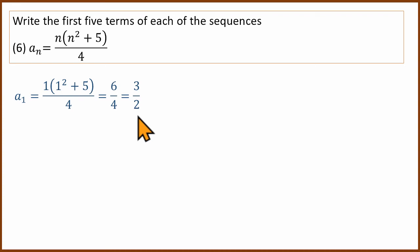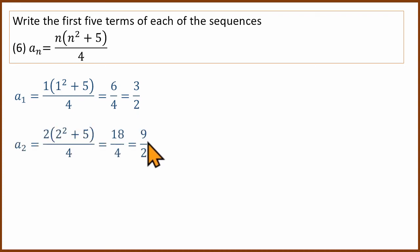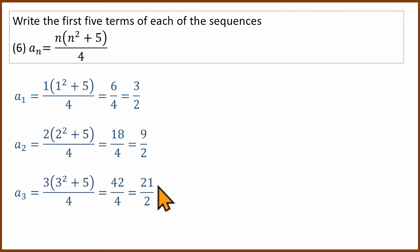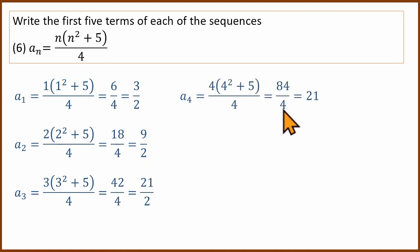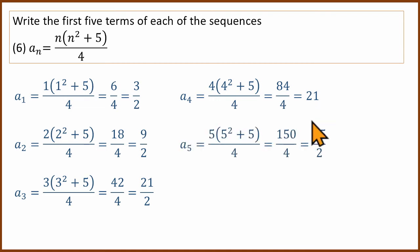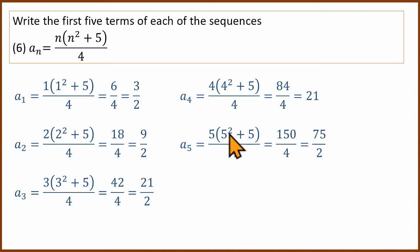You substitute values n = 1, 2, 3, 4, 5 into the nth term formula. For example, n = 5: 5 squared is 25, 25 plus 5 is 30, 30 multiplied by 5 is 150, 150 divided by 4 is 75/2. Just substitute the value and solve.